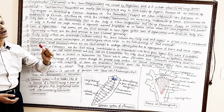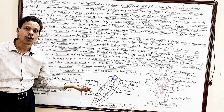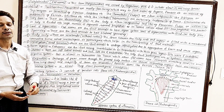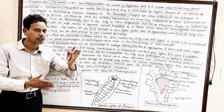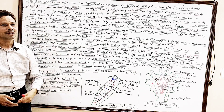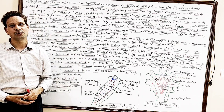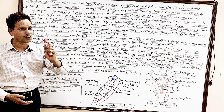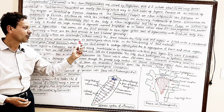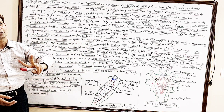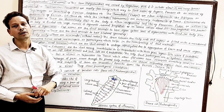Body cavity: there is no coelom. These platyhelminthes, these flatworms, are acoelomates — without any coelom. The space present between the body wall and body organs gets filled with connective tissue that is mesodermal in origin, named mesenchyme or parenchyma. This parenchyma helps in circulation of nutrient material.